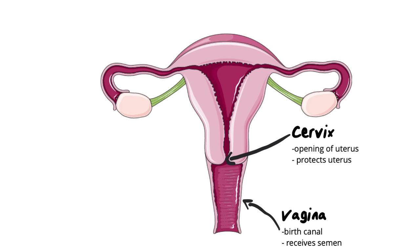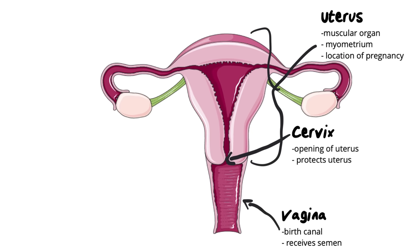The cervix is the opening to the uterus. It only allows a very small amount of fluid through — about half a centimeter wide — allowing menstrual blood to come out and semen to go in, but the penis does not go past the cervix. Moving to the uterus, which is this whole structure over here: the uterus is a muscular organ made out of myometrium. It is where pregnancy takes place and where an embryo will grow and attach to the walls. The uterus also expands a hundred times bigger during pregnancy — originally it is only about the size of a pear.